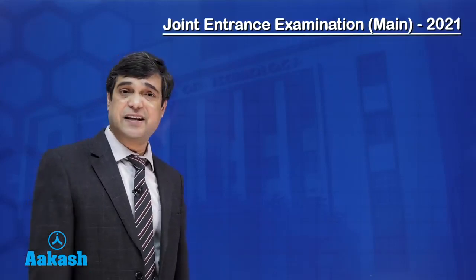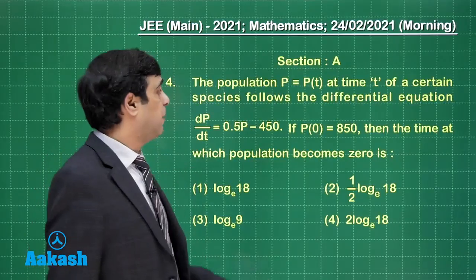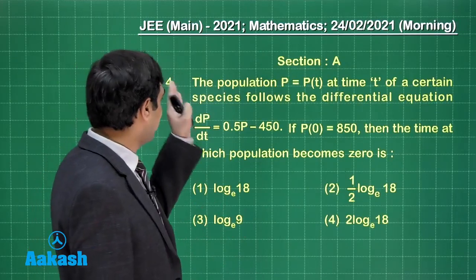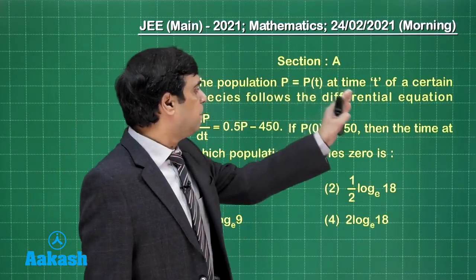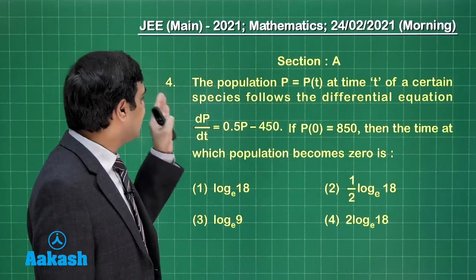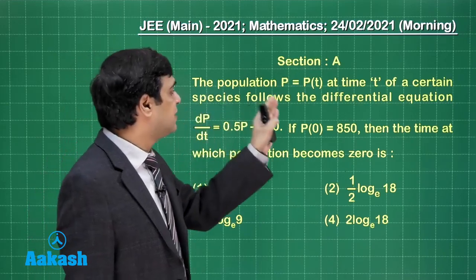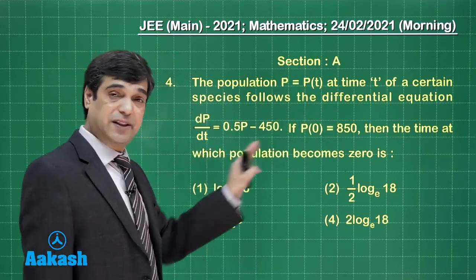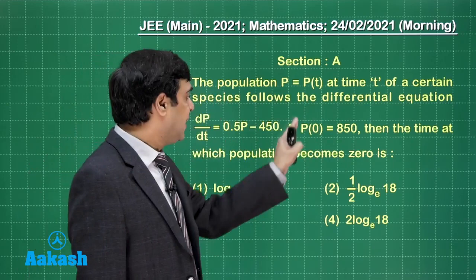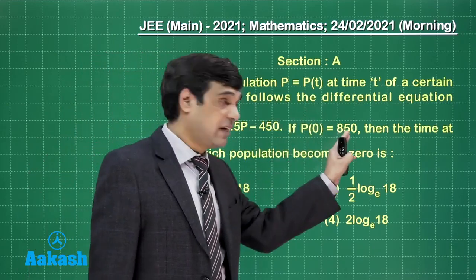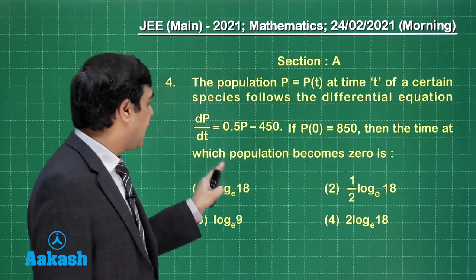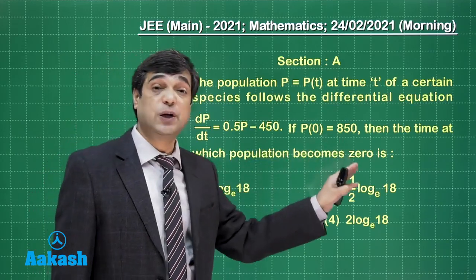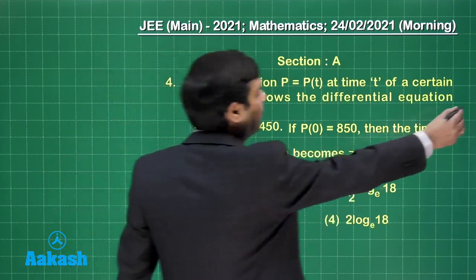Now moving forward let us consider question number 4 from this paper of 24th Feb first shift. The population P at time t of a certain species follows the differential equation given by this one. If P at time t equals 0 is 850 then the time at which population becomes 0 is a simple differential equation.